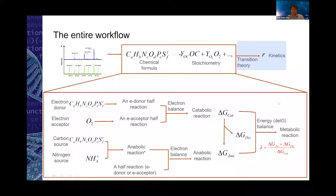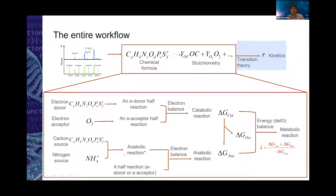This is a summary of the process of deriving metabolic reactions from the chemical formula of organic carbon. Metabolic reaction is a combination of catabolic and anabolic reactions. The catabolic reaction is a combination of the electron donor and acceptor half-reactions. The anabolic reaction starts from a given template reaction for anabolism, and depending on whether the reaction generates or consumes electrons, it may need to be combined with either the electron donor or acceptor half-reaction.